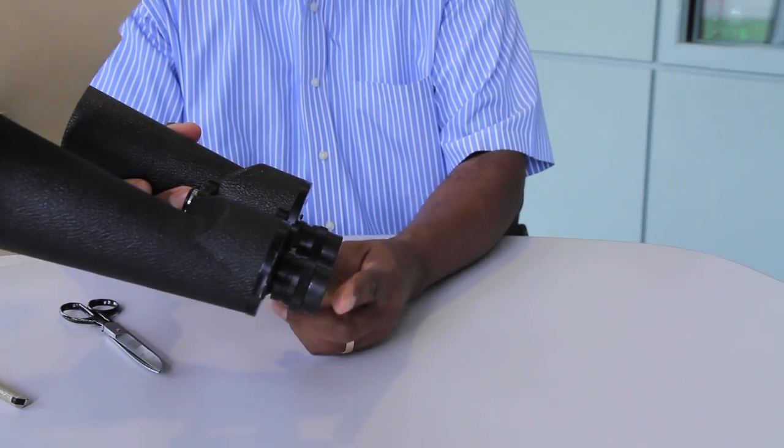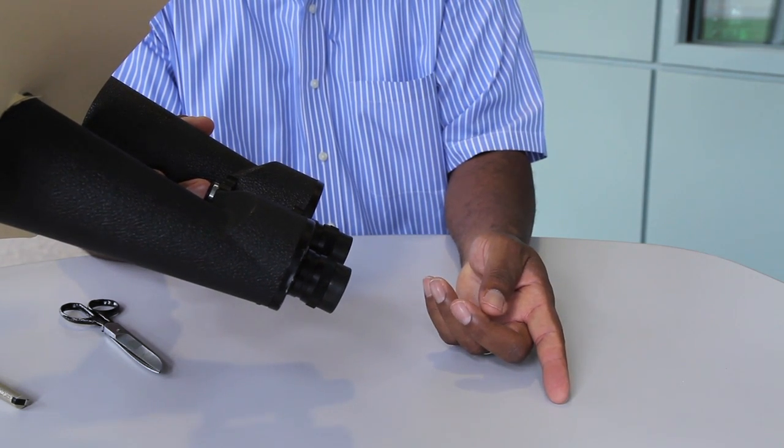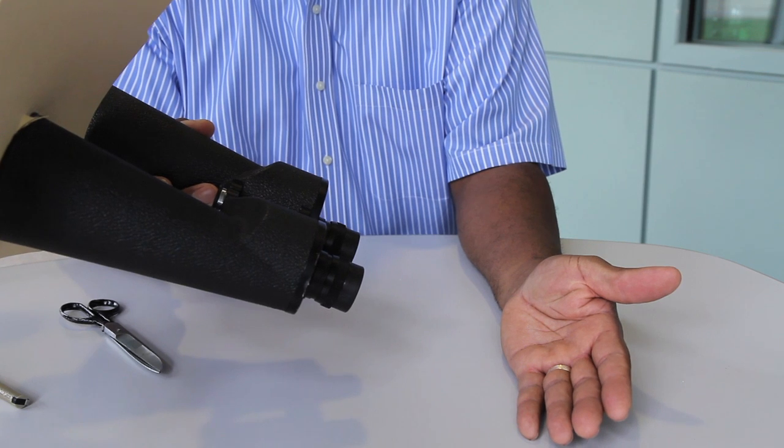And what it will do now is it will create an image of the sun down behind the binoculars, either on the ground or on any white sheet of paper or any card that I have.